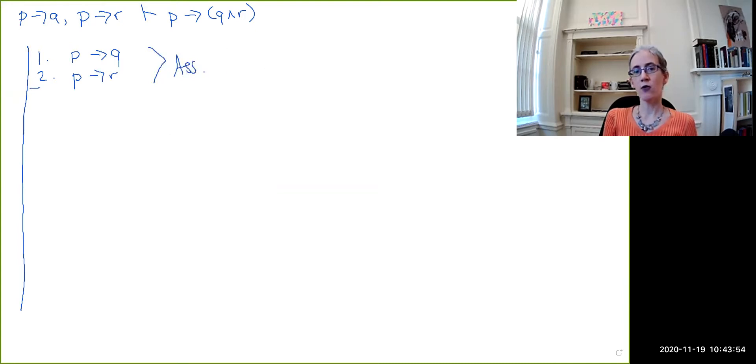So now look at what you're trying to prove. What you're trying to prove is a conditional. What does the conditional introduction rule look like? It says, if you can assume the antecedent and from that assumption derive the consequent, then you can use conditional introduction.